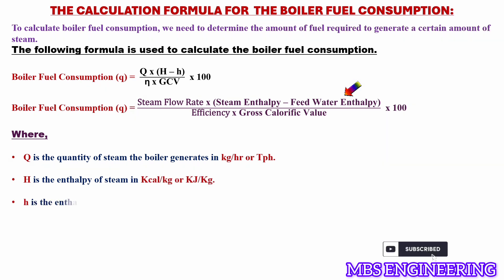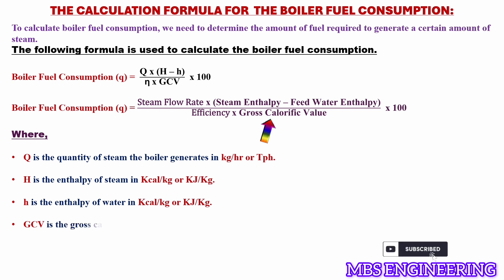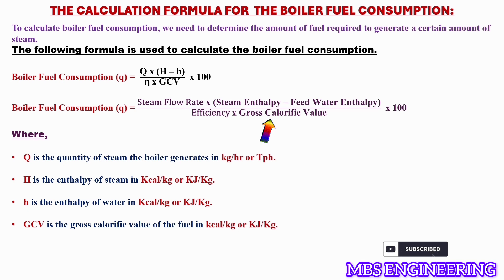Small h is the enthalpy of water in kilocalorie per kilogram or kilojoule per kilogram. GCV is the gross calorific value of the fuel in kilocalorie per kilogram or kilojoule per kilogram. Eta is the efficiency of the boiler in percentage.